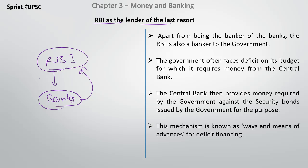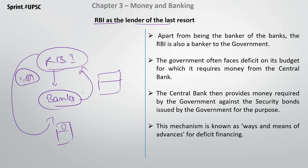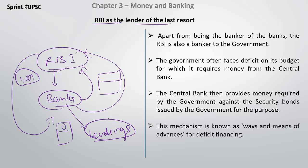RBI will either purchase bonds or sell bonds to manage money supply. If RBI is buying bonds, it is giving money supply; if it is selling bonds, it reduces money supply. Banks can get money from RBI so that banks can forward it in the form of lending. So the first function of RBI is to provide lending support to banks.